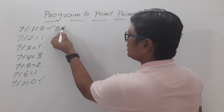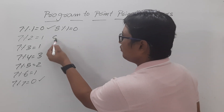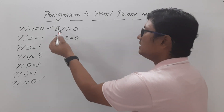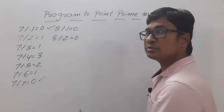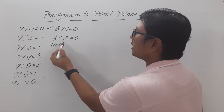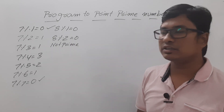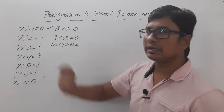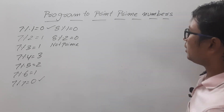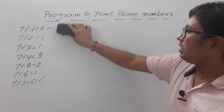Let me take another example: 8. If I divide by 1 I get remainder 0, and if I divide by 2 I also get remainder 0. So 8 is successfully divisible by 2 as well, which means 8 is not a prime number. With these two examples you should now understand whether a given number is prime or not.